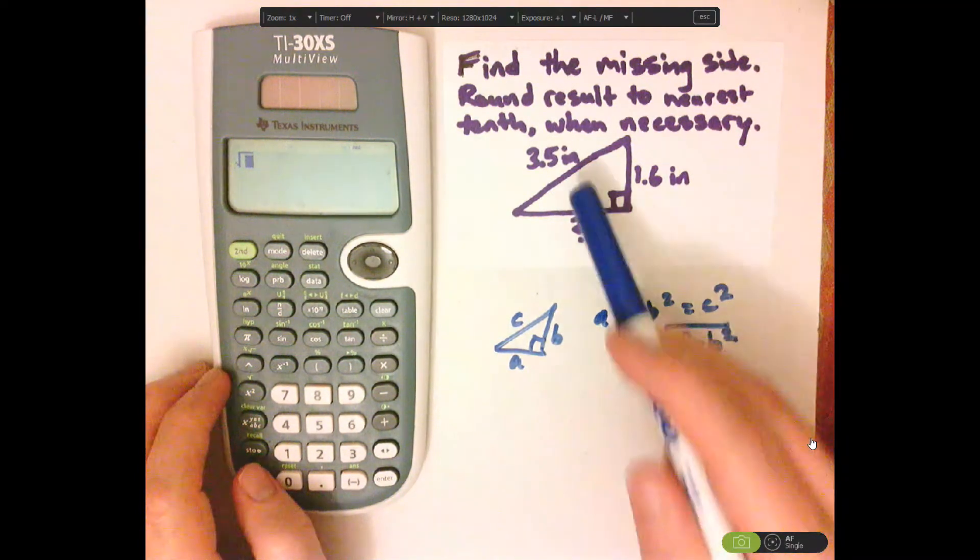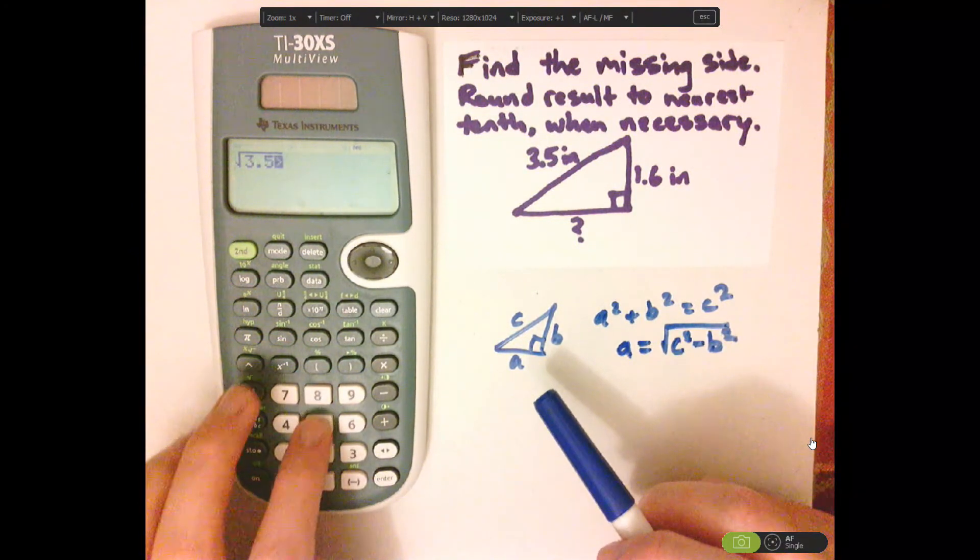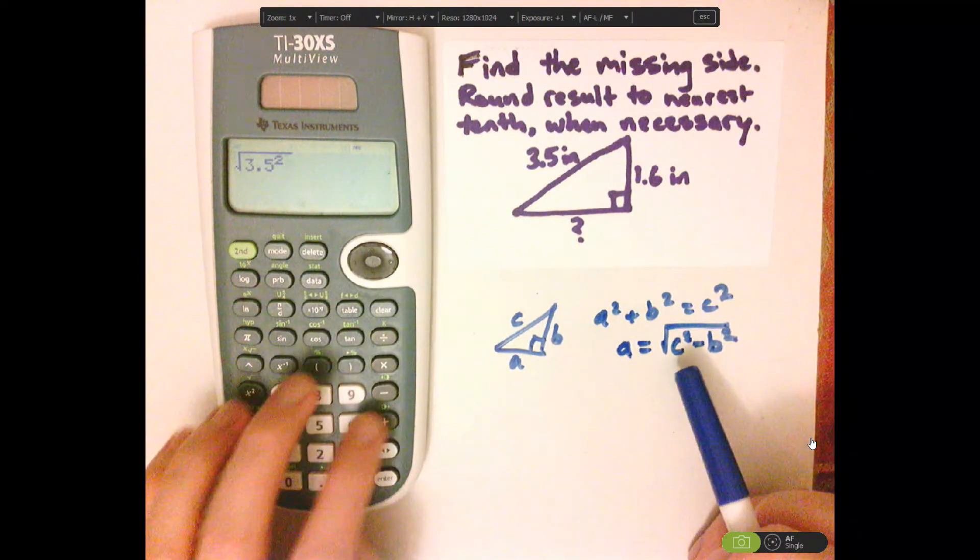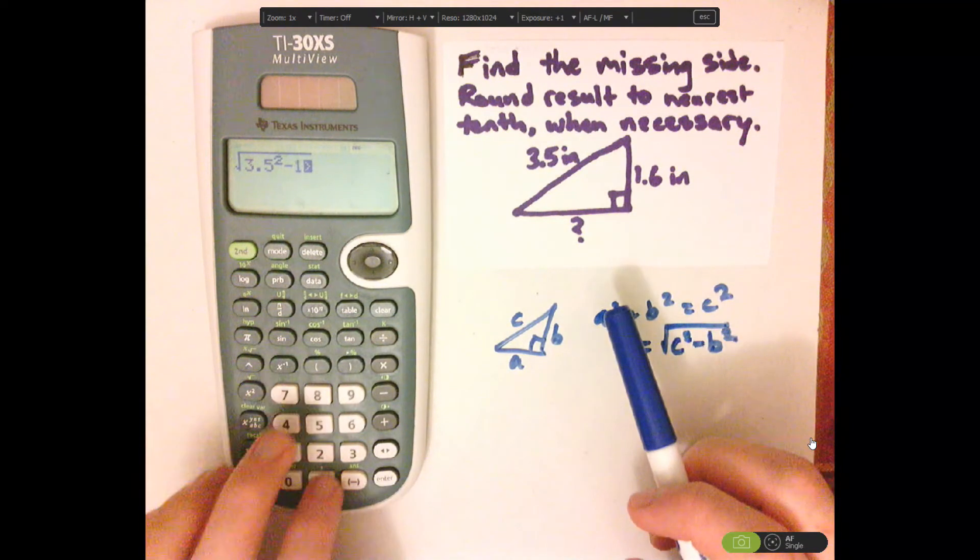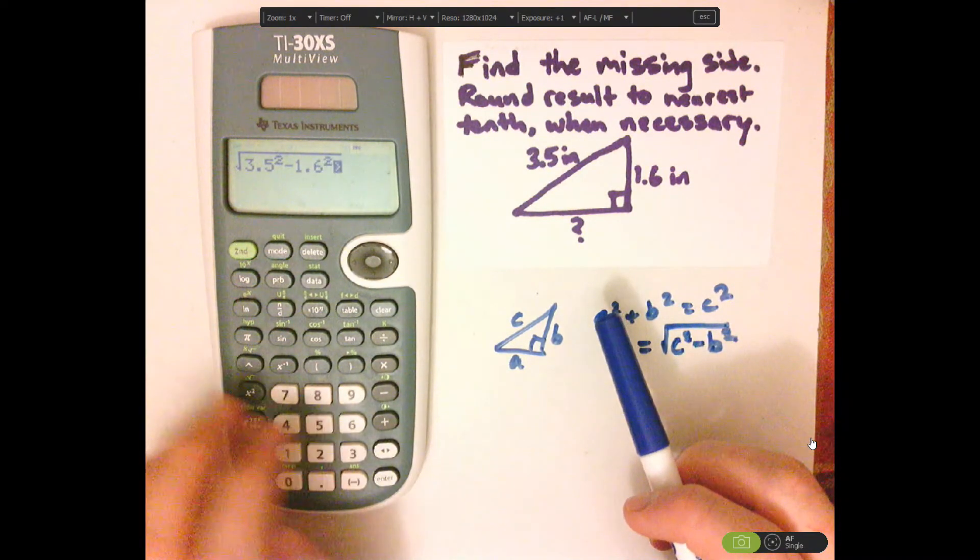C squared is 3.5 squared minus B squared, 1.6 squared, enter.